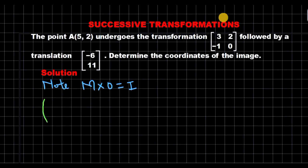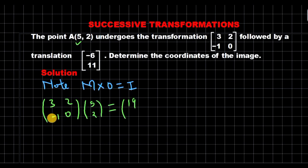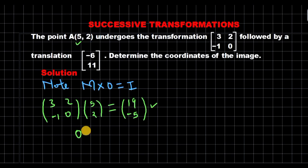Taking the transformation matrix [3, 2, -1, 0] and multiplying it by the position vector of the object point (5, 2): for the first row, 3 by 5 is 15, and 2 by 2 is 4; when you add, we get 19. Remember, we are multiplying row by column. For the second row, negative 1 by 5 is negative 5, and 0 by 2 is 0; therefore negative 5 plus 0 gives us negative 5. So this represents the position vector of the first image A' as (19, -5).